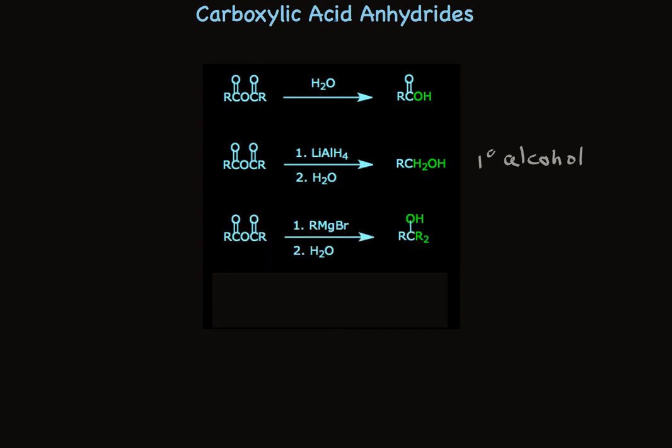Like the reaction with acid chlorides, Grignard reagents react with anhydrides as well, adding twice to make tertiary alcohols. So this alkyl group from the Grignard reagent adds twice to make the tertiary alcohol.